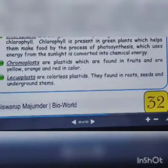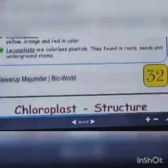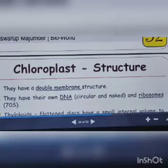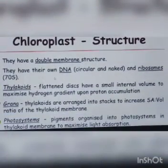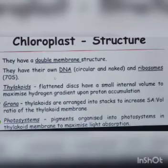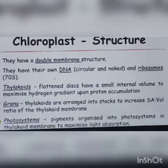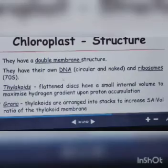Moving to chloroplast structure, they have a double membrane. Both mitochondria and chloroplasts have their own DNA, which is circular and naked in structure, and ribosomes which are 70S.